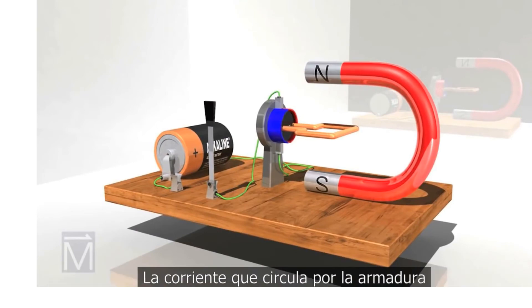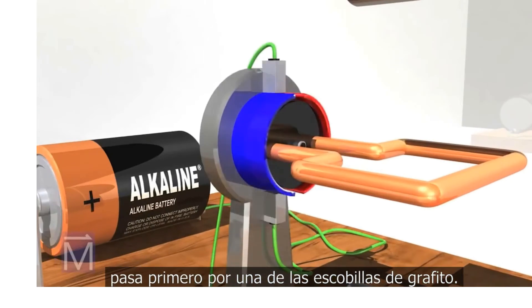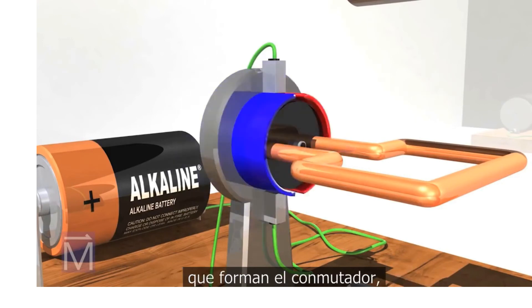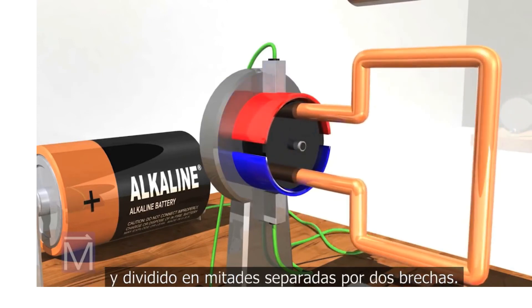The current that runs into the armature passes first through one of these graphite brushes, then through one of the two semicircles that make up what is called a commutator, which is a rotary electrical switch made of copper and featuring two gaps.